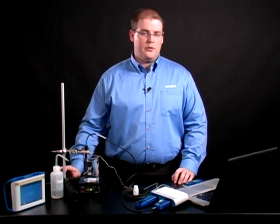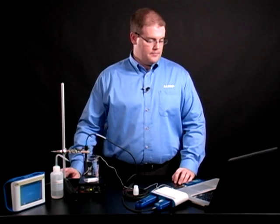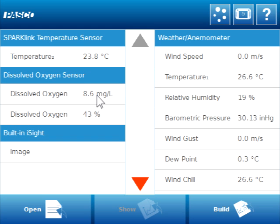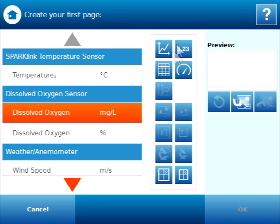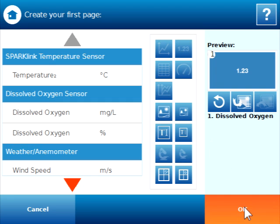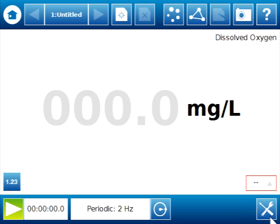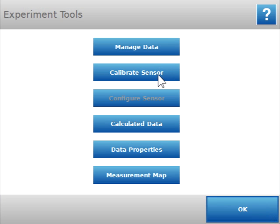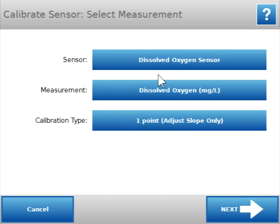Next, we need to open or create a lab file. I'm going to build a simple page with a digits display of dissolved oxygen in milligrams per liter. Next, we need to open Experiment Tools. Select Calibrate Sensor and make sure that the measurement dissolved oxygen in milligrams per liter is selected. Then click Next.